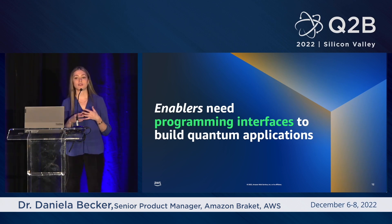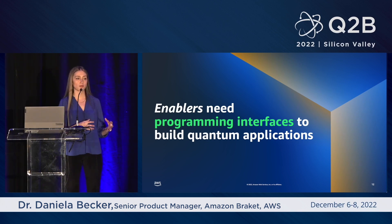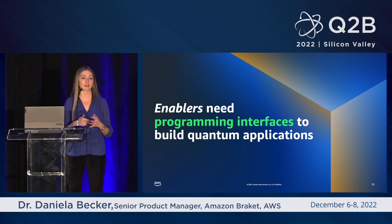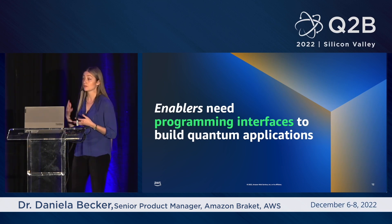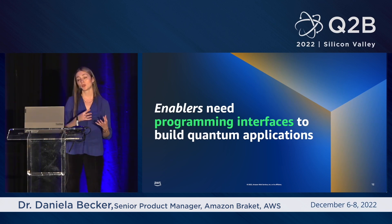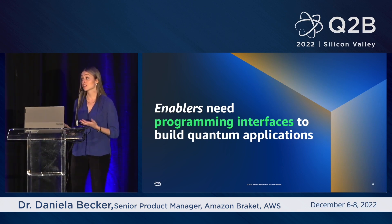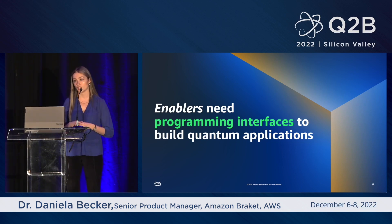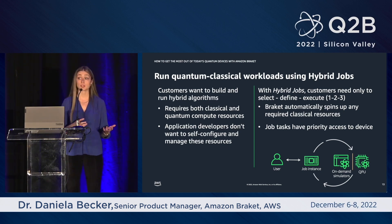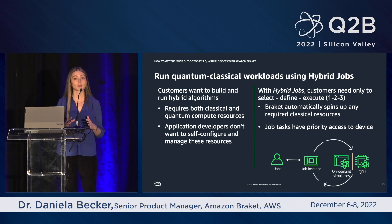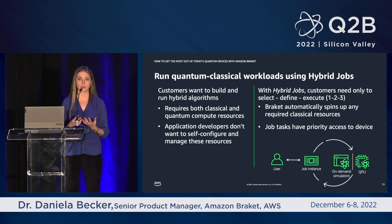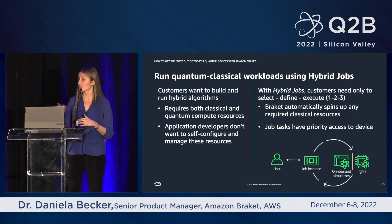Now let's think about how enablers might take that a step further. Enablers need to take advantage of quantum hardware available today, and as we all know, the devices are inherently noisy — we're currently in what many call the noisy intermediate scale quantum, or NISQ, era. As a result, most applications enablers build are inherently hybrid, where quantum computers use classical coprocessing. That's why we introduced hybrid jobs: all you need to do is select, define, and execute, and Braket will take care of spinning up any classical resources needed. Application developers can focus on application development, not infrastructure management.